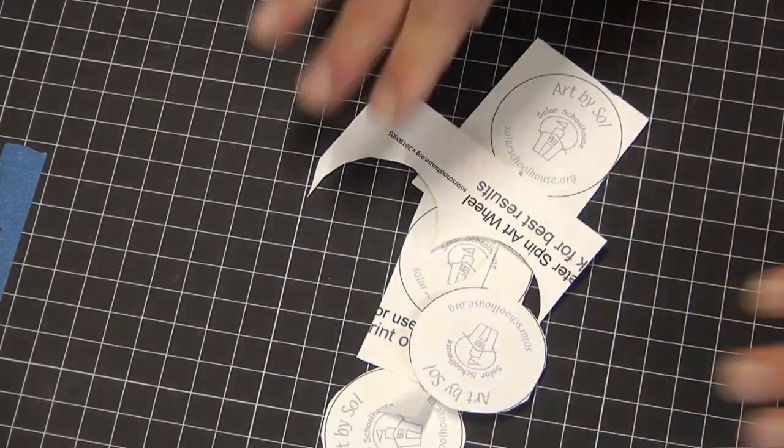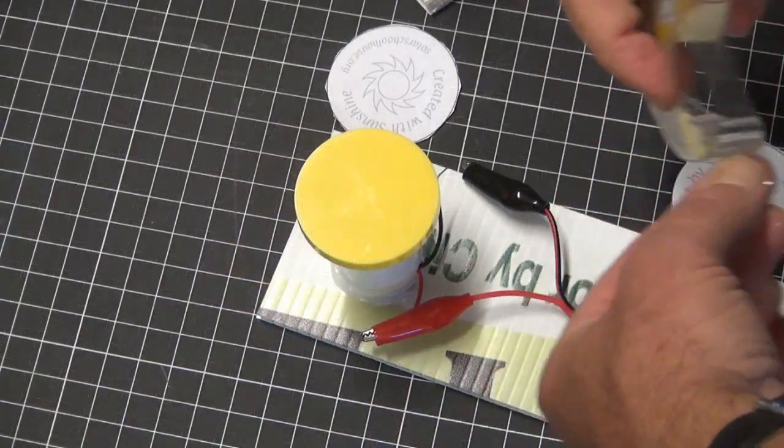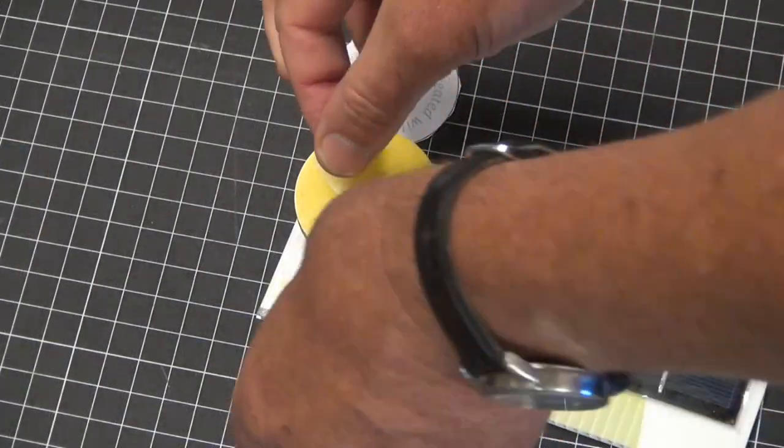Put a piece of double-sided tape on the wheel and attach the paper disc to the yellow wheel.